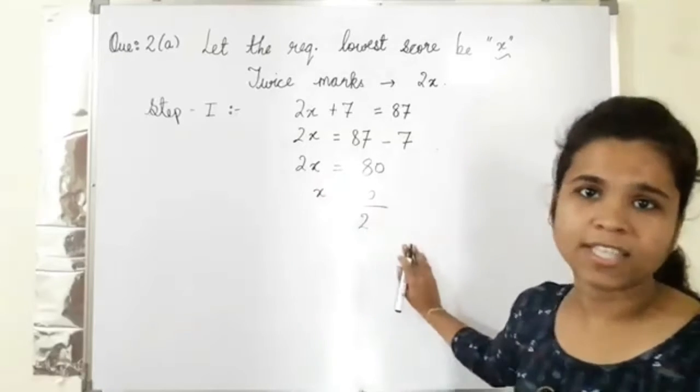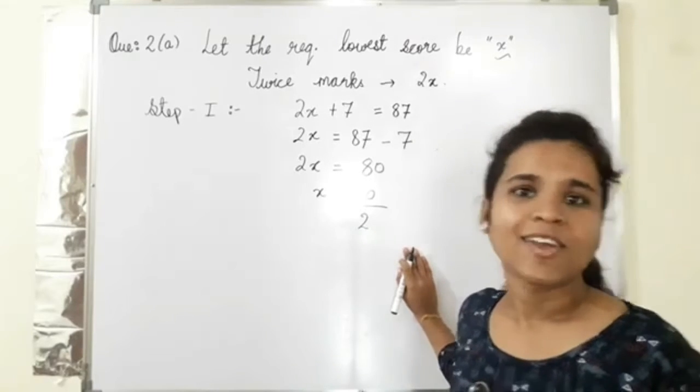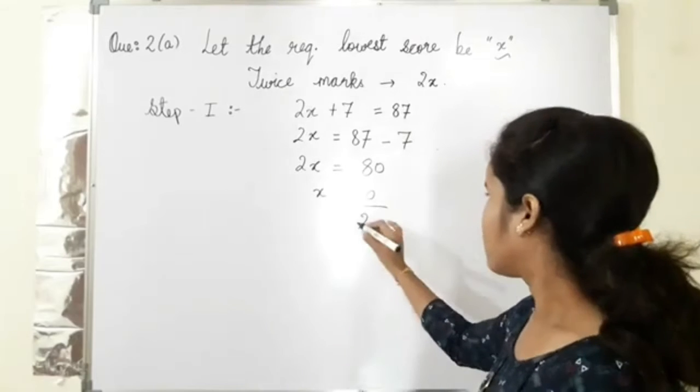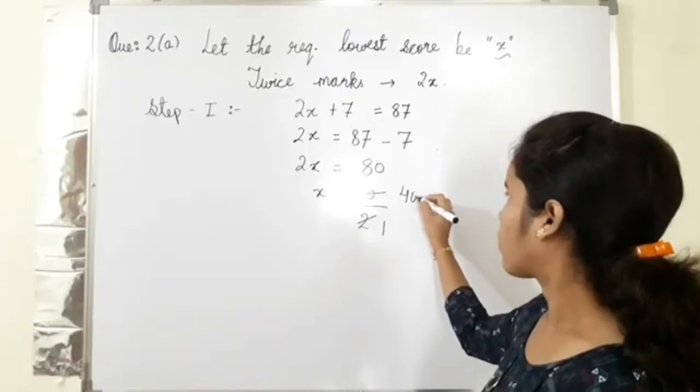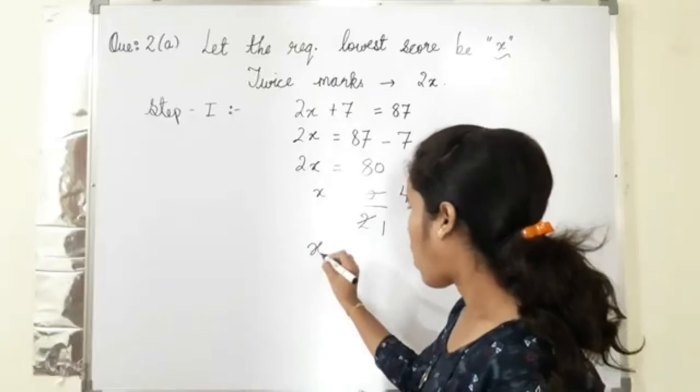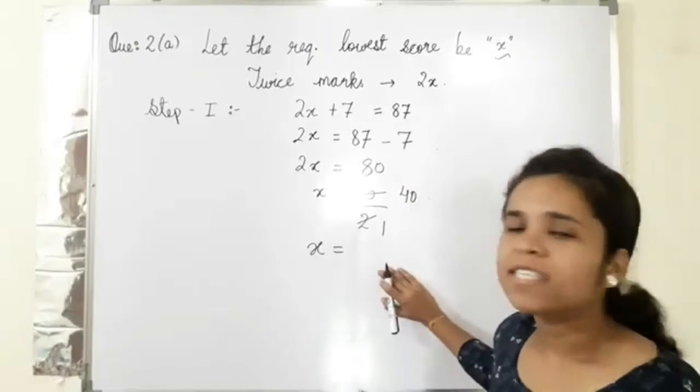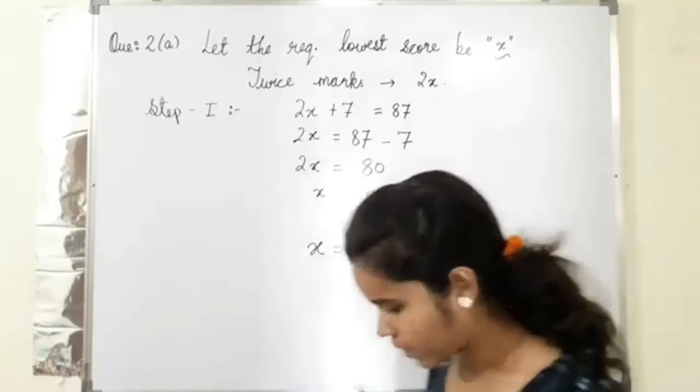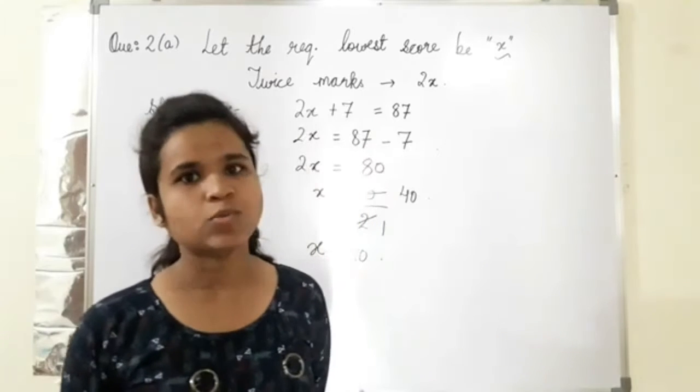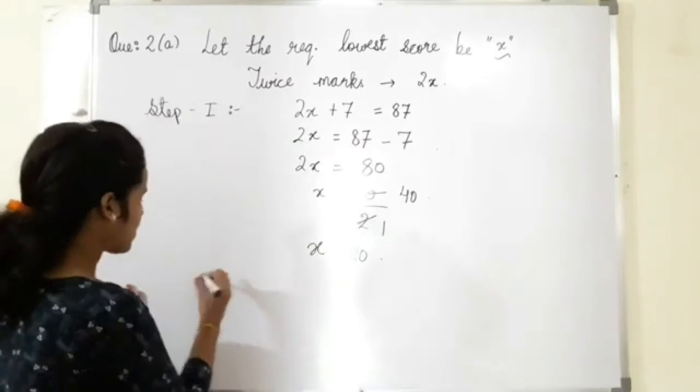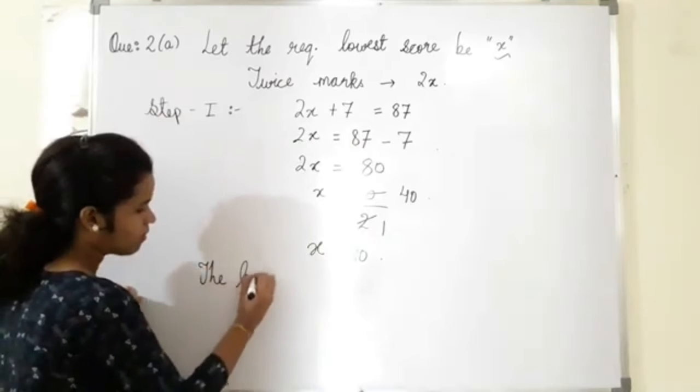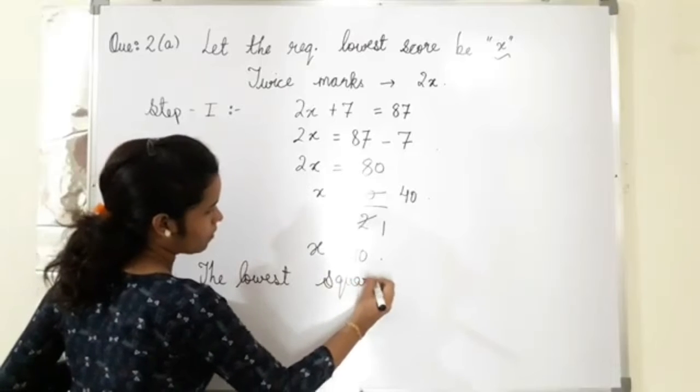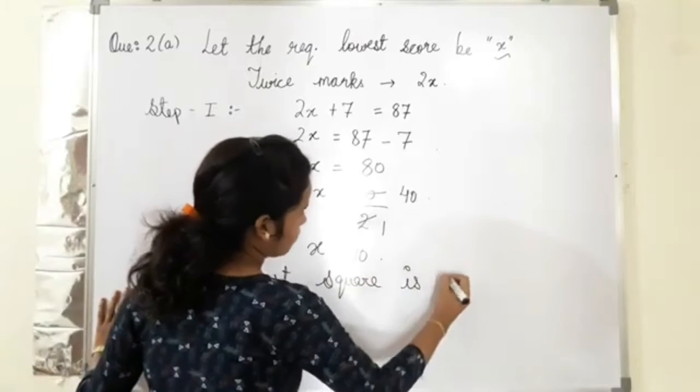Now calculate this, what is the value? Forty, two one is two, two fours are eight, zero is zero. So the required lowest number is, what is the value of x? We got 40. And in the question, what was asked? What is the lowest score? So the lowest score is 40.